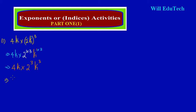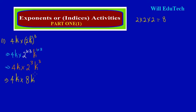Let's simplify this quickly. I can just bring down my 4k again. Remember, 2 to the 3 is the same as 2 times 2 times 2, and that is the same as 8 — two 2s make 4, and four 2s give us 8. So this is really 8, and I have k being raised to the third power.